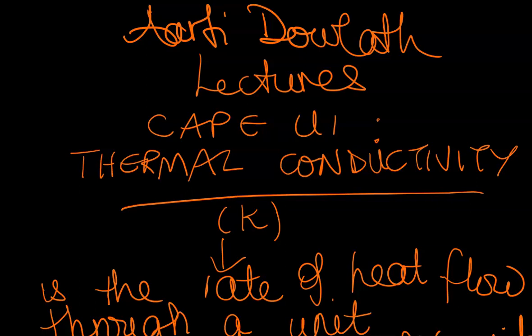Now when we talk about thermal conductivity, thermal conductivity is a property of the material. Similar to resistivity when we looked at electricity, thermal conductivity is a property that determines the rate at which heat will flow. So what you will find is that if you have a very good conductor, your thermal conductivity is larger than if you have a poor conductor.